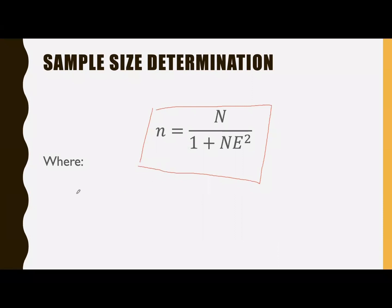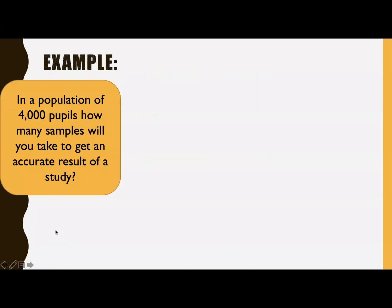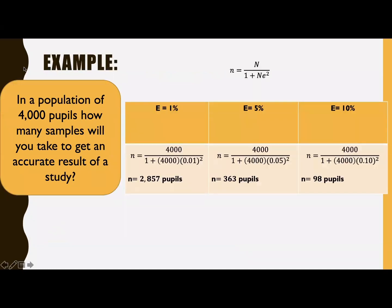Where small n is the sample, while capital N is the population and E is the margin of error, it can be 5% or 10% or 1%. Example: in a population of 4,000 pupils, how many samples will you take to get an accurate result of the study?